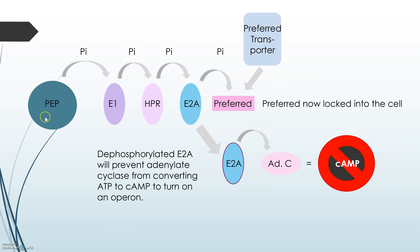The phosphate is passed from PEP to E1, then HPr, then E2A. When a preferred substrate is flowing into the cell via a transporter, it will be phosphorylated to lock it into the cell, and E2A becomes dephosphorylated. This dephosphorylated E2A binds to adenylate cyclase and prevents it from converting ATP to cAMP, so cAMP cannot bind to an operon to activate non-preferred substrate entry.